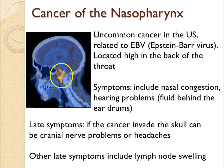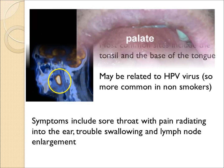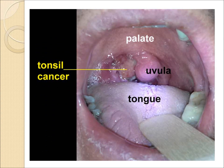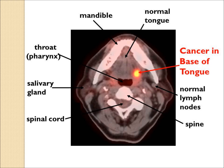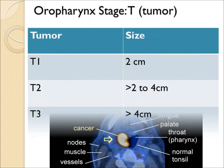Cancer of the oropharynx is more common in the U.S. This is the cancer seen in non-smokers due to HPV infections. The tonsil and base of tongue are the most common sites. A sore throat, pain radiating into the neck, trouble swallowing, and lymph node enlargement are common. Here is a typical appearance of a tonsil cancer and a typical PET-CT of a base of tongue, left tonsil cancer. The staging system is similar to oral cavity cancer.